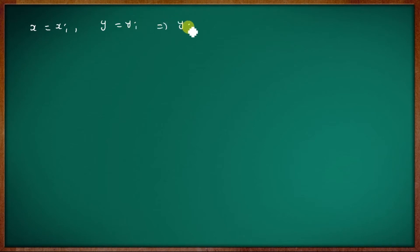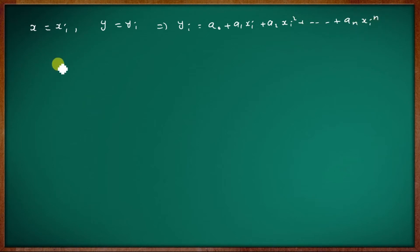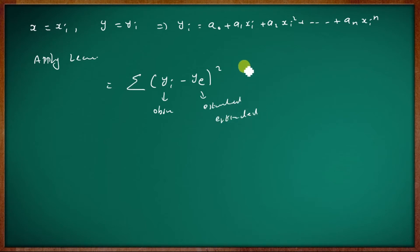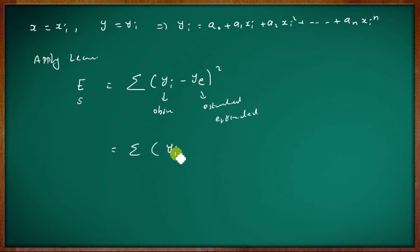For each xi, the corresponding estimated value yi is given by: yi equal to a0 plus a1 xi plus a2 xi squared, and so on, up to an xi raised to n. We apply the least square method: the summation of yi minus the estimated yi, the whole quantity squared. Here yi is the observed value and the estimated yi is the expected or estimated value.